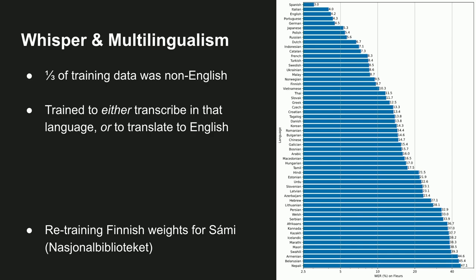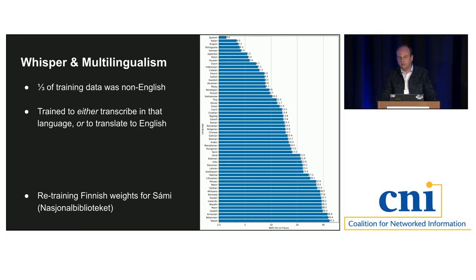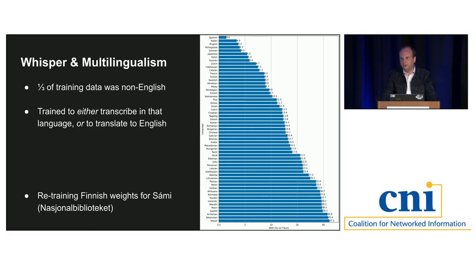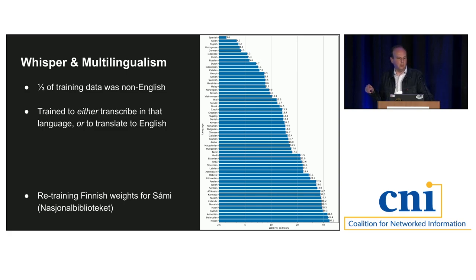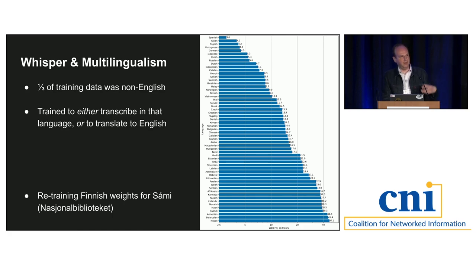Whisper supports many languages beyond English — an important intervention into what can feel like an English-only situation with deep learning models. You can see everything from Spanish and Polish down to Galician and Arabic. Not every language is on the list, but there are interesting critical interventions that GLAM and memory institutions are making into Whisper models, possible because the weights are freely downloadable. At the National Library of Norway, they're retraining the Finnish weights for Sami, the indigenous language of northern Scandinavia — a smart move since Finnish and Sami share linguistic roots.